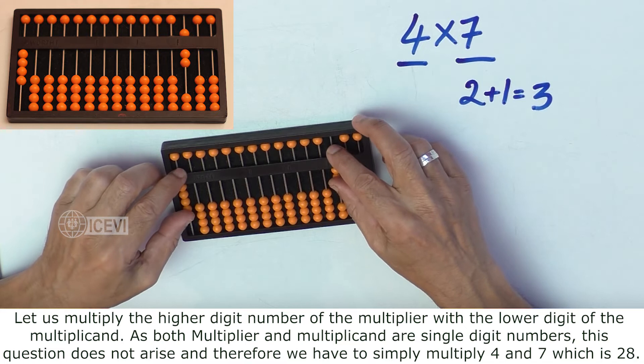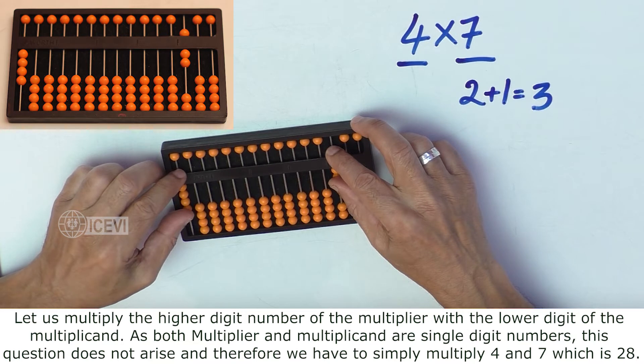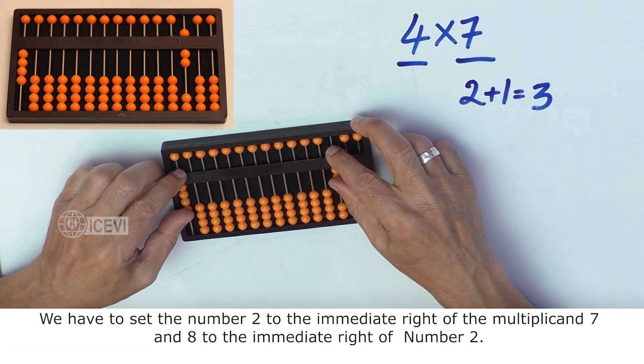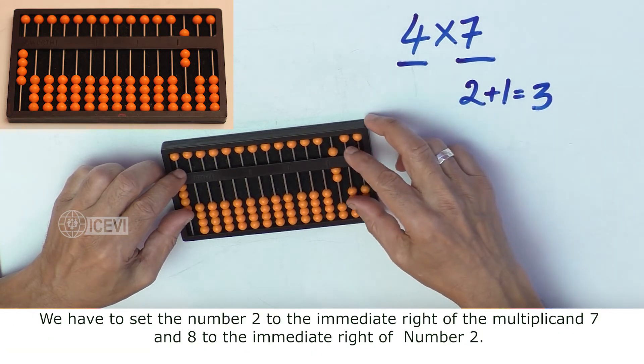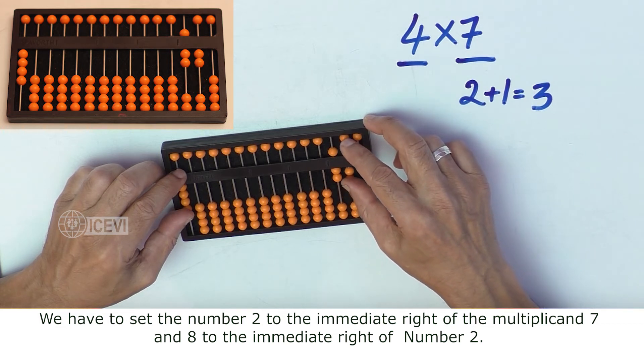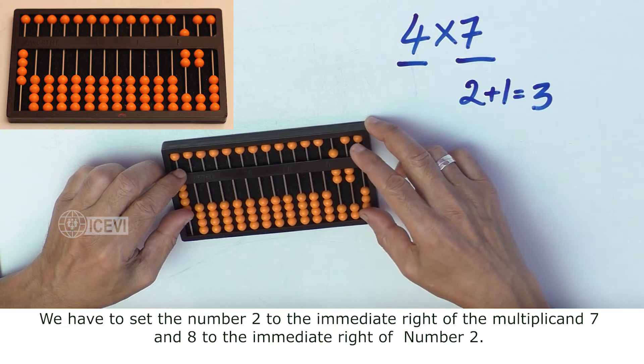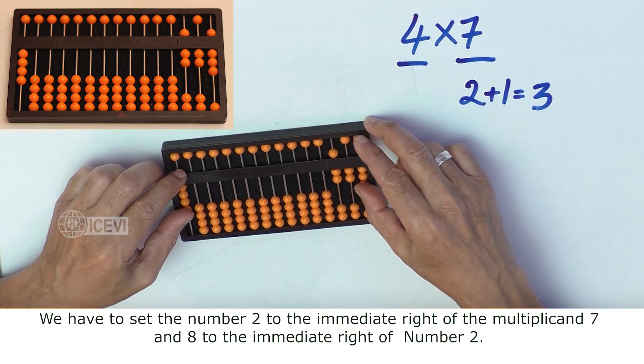We have to set the number 2 to the immediate right of the multiplicand, and 8 to the immediate right of 2.